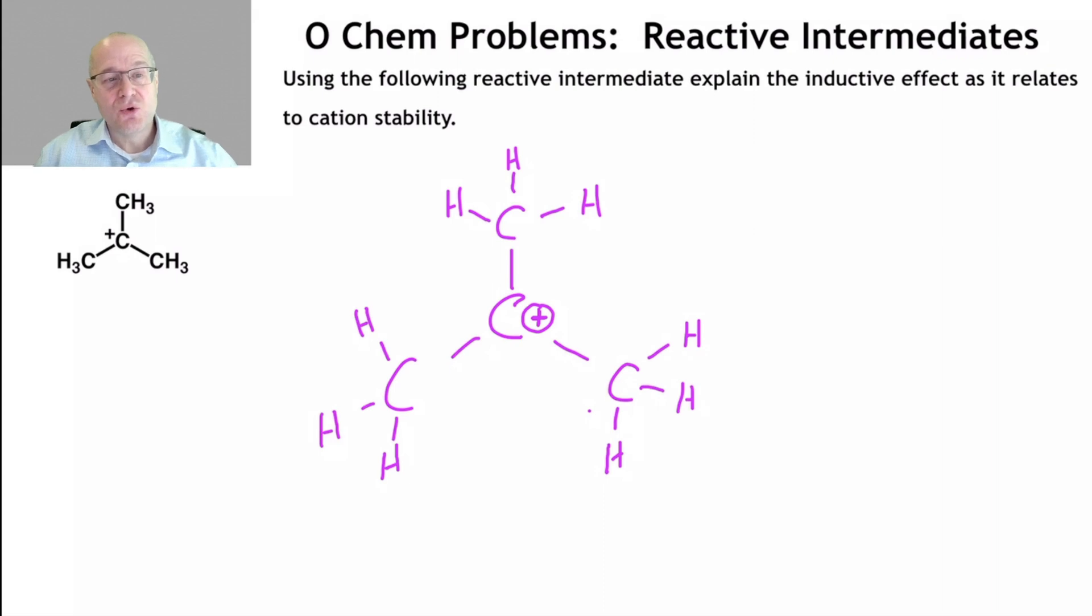So it's going to draw electron density through the sigma system. And we draw it like this. We draw little arrowheads on the bonds to show that the electron density in those bonds is being drawn towards the central carbon. Because the central carbon is more electronegative because it's electron deficient. Therefore, it's a little bit smaller in an atomic radius.